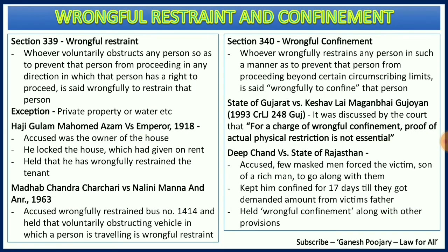Section 339 defines wrongful restraint. Two important aspects to remember: somebody has to voluntarily obstruct another person's way, and that obstruction prevents that person from proceeding in any direction in which they have a right to proceed. Crucially, the person cannot proceed in one way but all other ways remain free. One exception: section 339 does not apply to private property — if someone is trying to enter your house, you have the right to stop them.